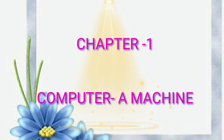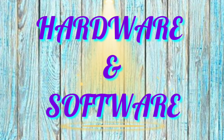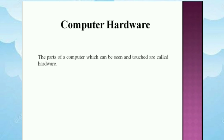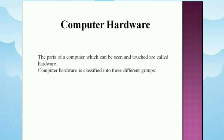We will continue with the same chapter, Computer: a Machine. And our today's topic is Hardware and Software. All the physical parts of the computer that can be seen and touched are called Hardware. Computer Hardware is classified into three main parts: Input Devices, Processing Device, and Output Devices, and also includes the Storage Device.